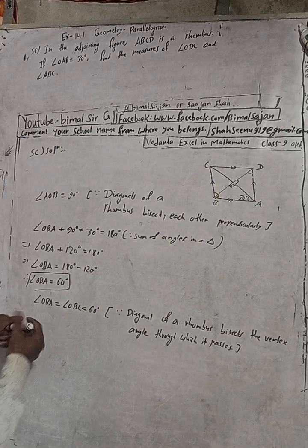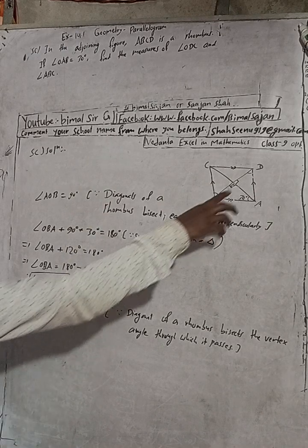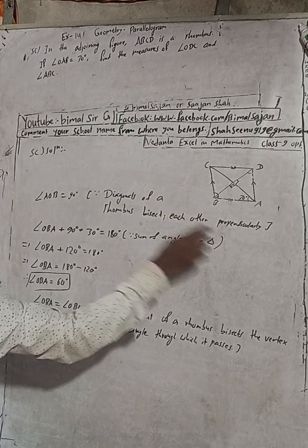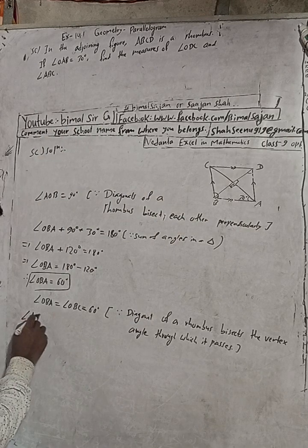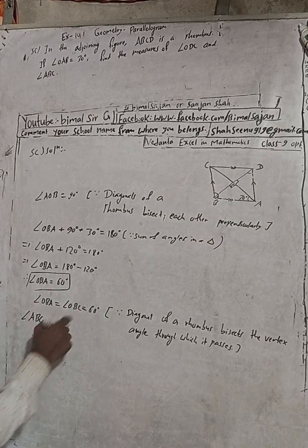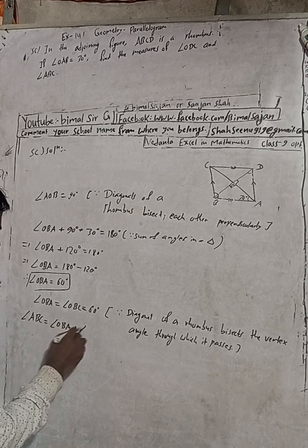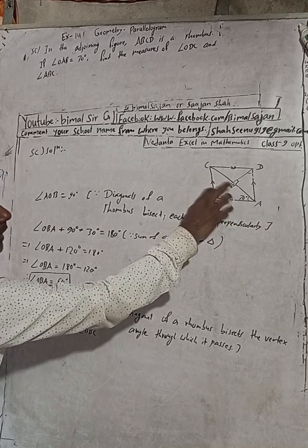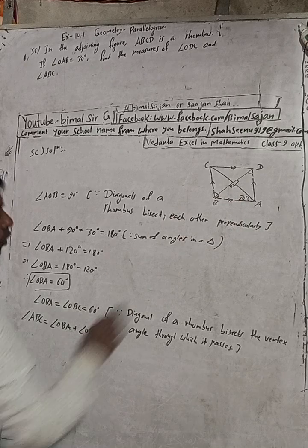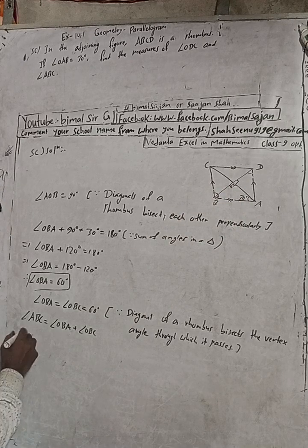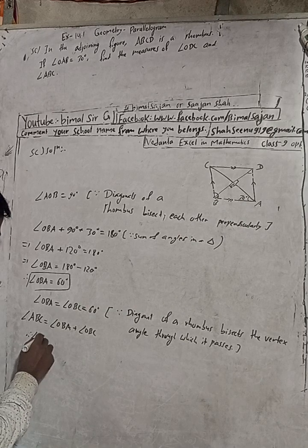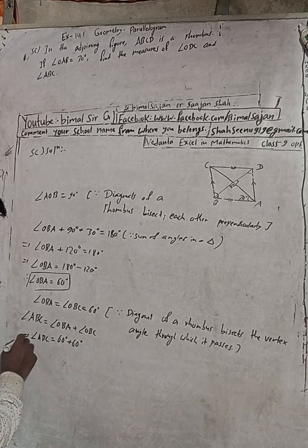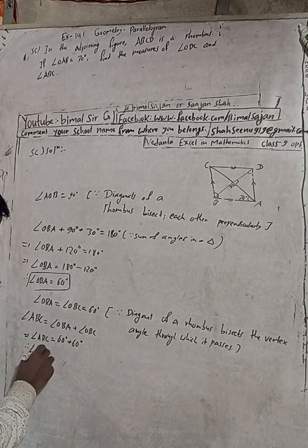So now we can write: our target was to find angle ODC. First let me find angle ABC. Angle ABC is equal to angle OBA plus angle OBC. This angle is equal to OBA plus OBC — that is 60 degrees plus 60 degrees. Therefore angle ABC is equal to 120 degrees.